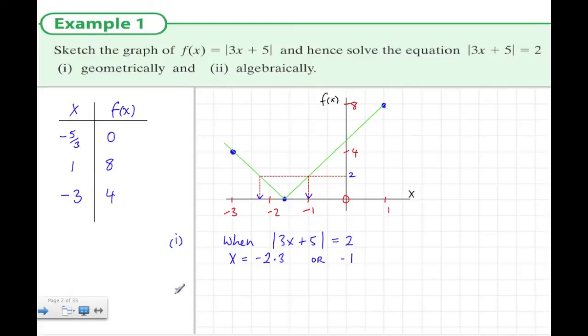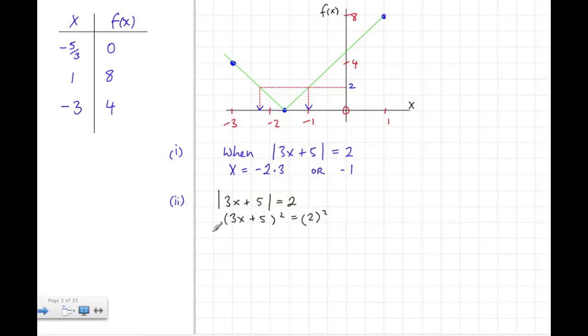To be perfectly accurate, we would do this algebraically as well. The algebraic method is that we square both sides, which gets rid of the modulus symbol. We square 3x plus 5 and square 2. When we square 3x plus 5, using the binomial, we get 9x squared plus 30x plus 25 equals 4. Take 4 from both sides, then divide both sides by 3.